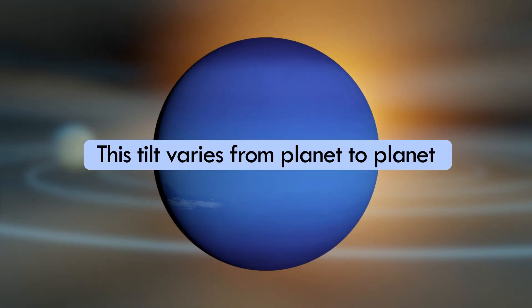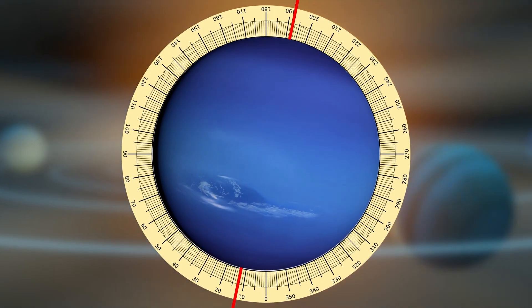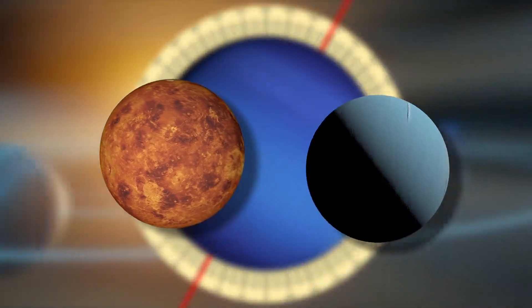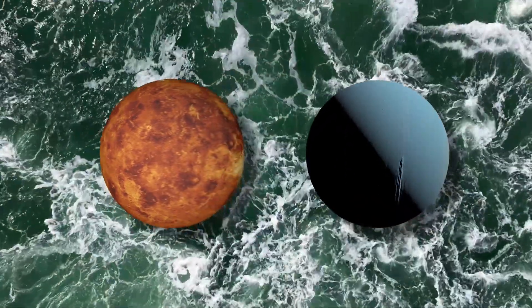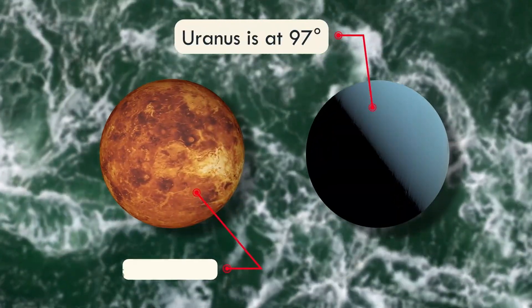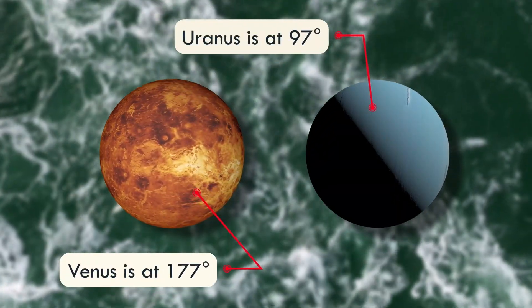Generally, this tilt varies from planet to planet, from a 2 degree to a 29 degree tilt. Venus and Uranus, however, once again swimming against the tide, have greater tilts. Uranus is at 97 degrees, and Venus is at 177 degrees.